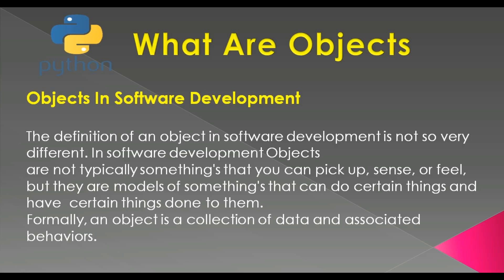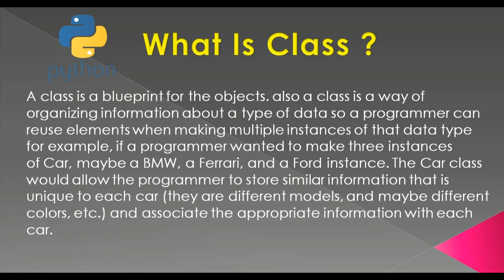Now this was in the real world, but in software development the definition of an object is not so very different. In software development, objects are not typically things that we can pick up, sense, or feel, but they are models of something that can do certain things and have certain things done to them. Formally, in software development, an object is a collection of data and associated behaviors.